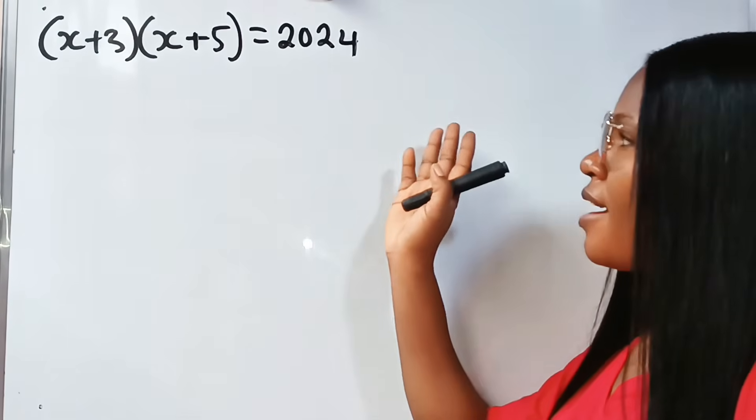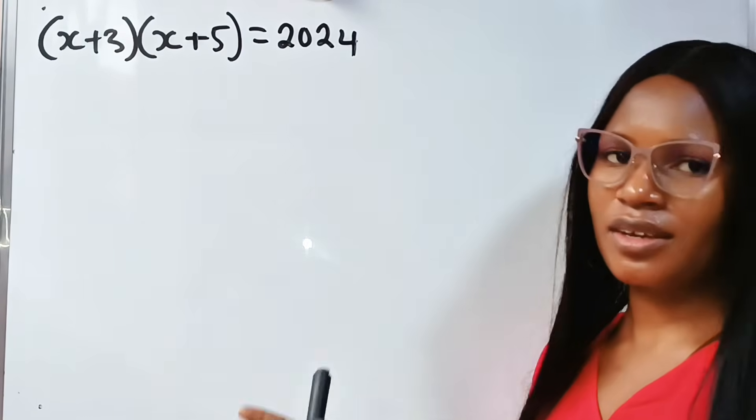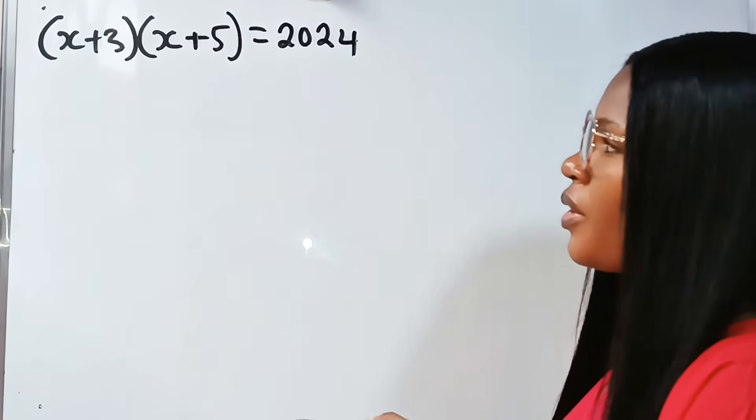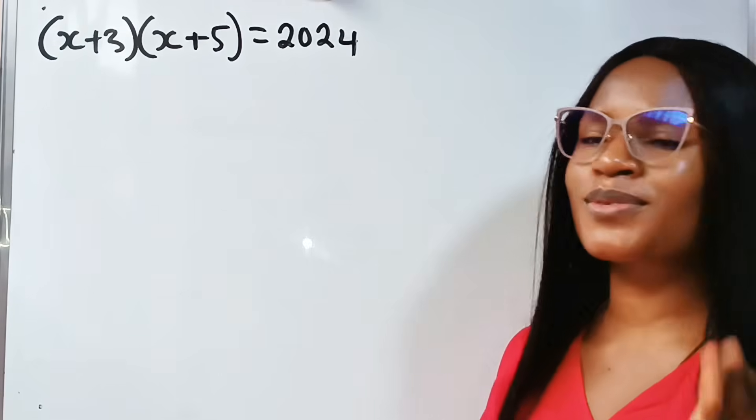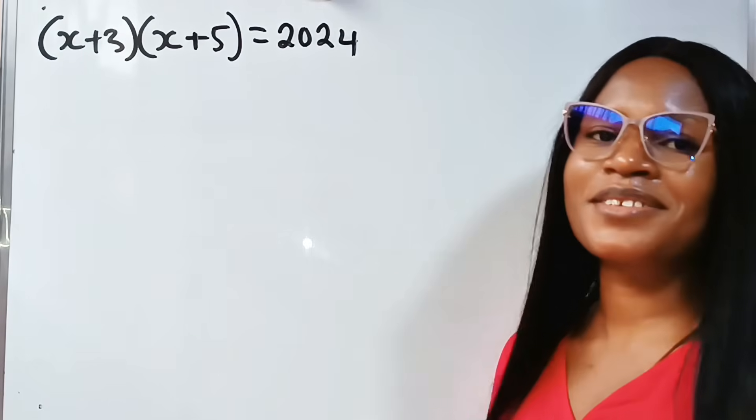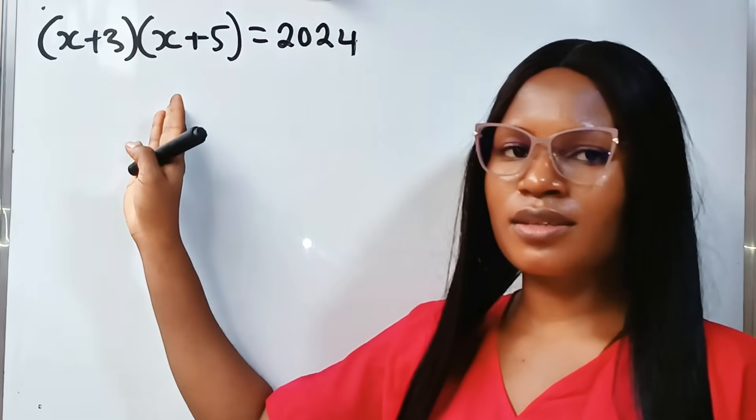This is a very nice algebra question. We are asked to find the value of x if (x + 3)(x + 5) = 2024. First of all, let us open the brackets.